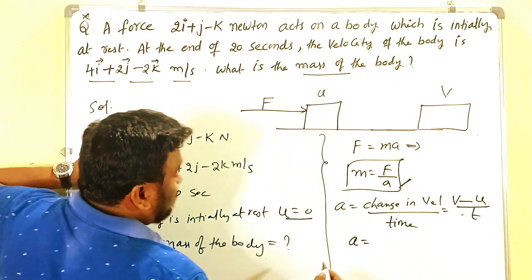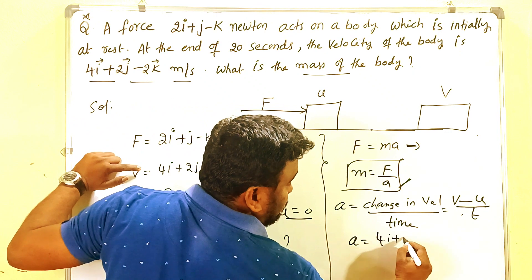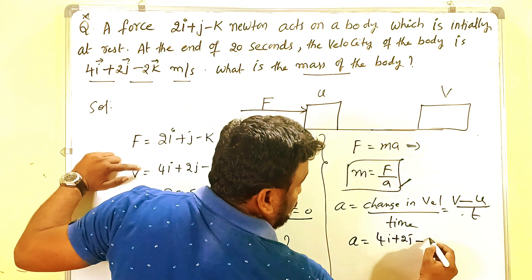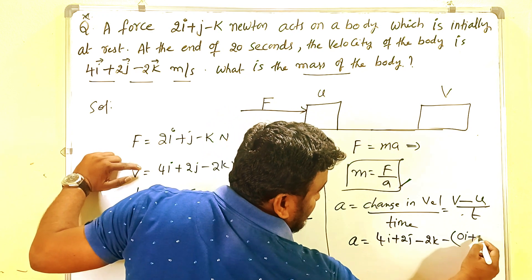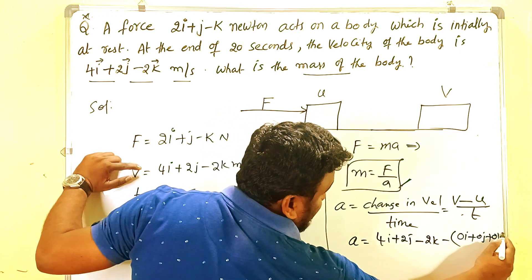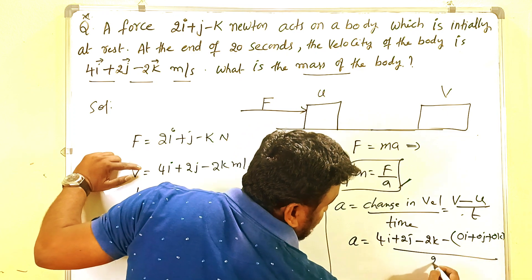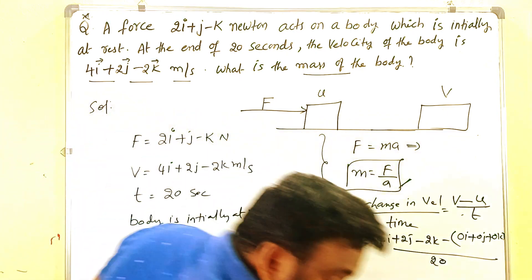Minus U is zero, which is 0i plus 0j plus 0k, the null vector. The denominator is 20.